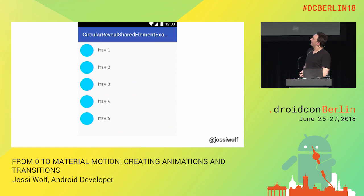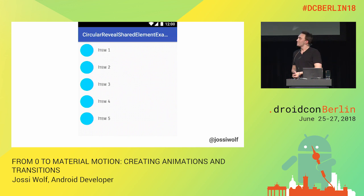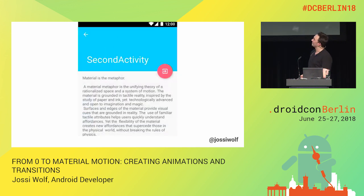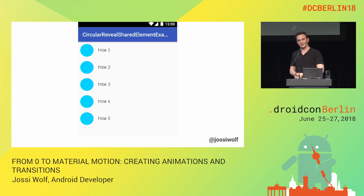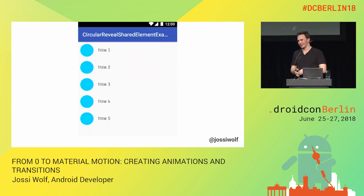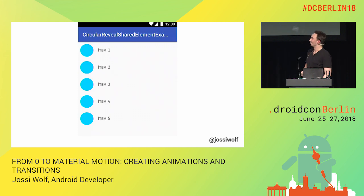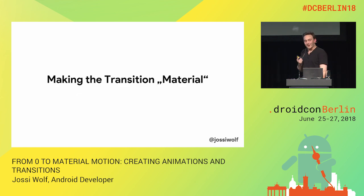Now we have our really nice circular reveal. But what about the material part? We want our animation to feel like material — that's what it's there for. So let's make the transition material.